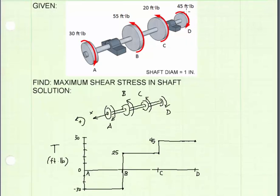At point D, we have a 45 foot-pound torque being applied in the negative direction. That's going to take our internal torque diagram back down to zero. Because we end at zero at D, we have confidence that we have drawn the diagram correctly.